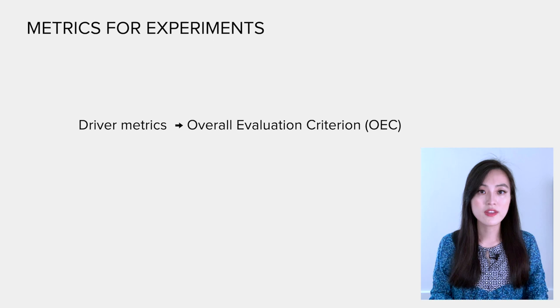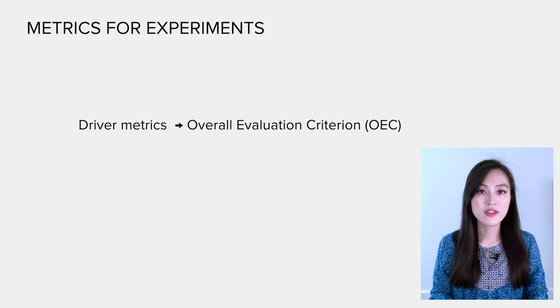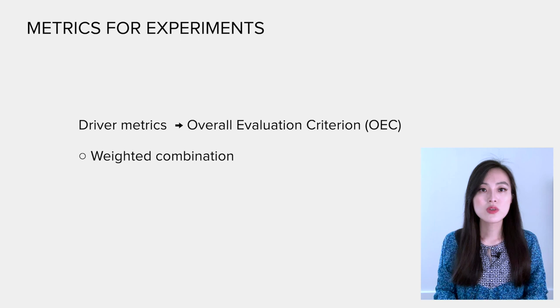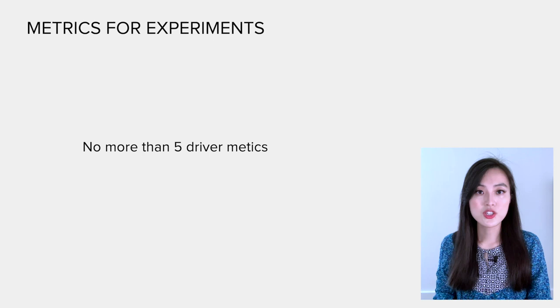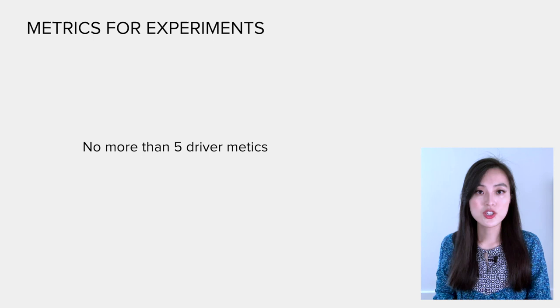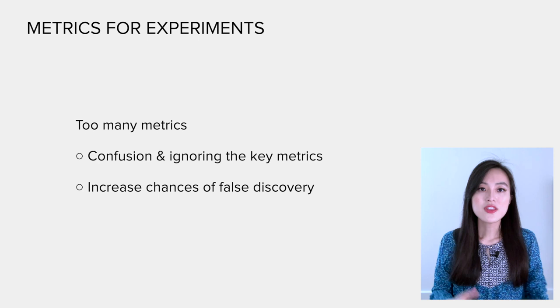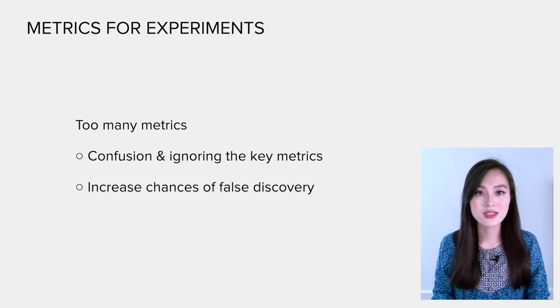Finally, I want to share with you two practical suggestions from the book on formulating metrics for experiments. One is to combine a few target metrics into an overall evaluation criteria, a weighted combination of the most important driver metrics, and use it as the only criteria for an experiment. If coming up with such an OEC is difficult, the authors recommend choosing no more than five metrics as their target metrics. There are two main disadvantages of having too many metrics. One is that too many metrics may confuse people and it may possibly lead to ignoring the key metrics. The other downside is including too many metrics may affect the decision-making process and increase the chances of having false discoveries.